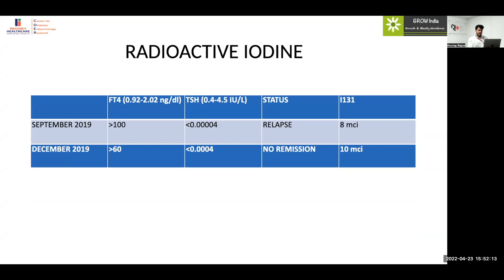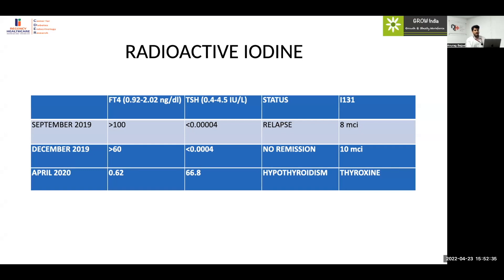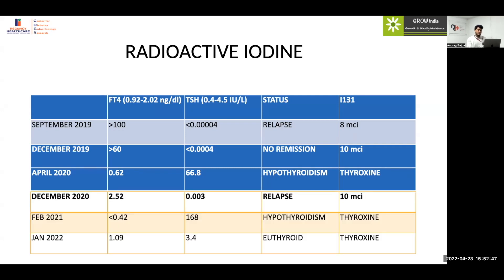Radioactive iodine I-131 was given at 8 microcurie units in September 2019. Tests were repeated after two months, but despite radioactive iodine, the patient showed no improvement — FT4 remained elevated with suppressed TSH. Radioactive iodine was repeated in December 2019, following which thyroid function normalized in subsequent months. The patient went into hypothyroidism in April and was started on thyroxine. However, unfortunately, after one year of radioactive iodine therapy, the patient relapsed with another episode of thyrotoxicosis.